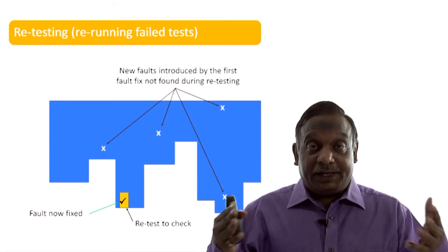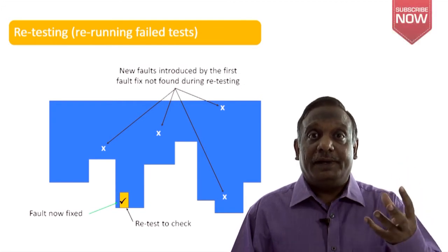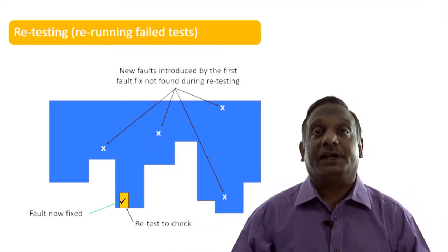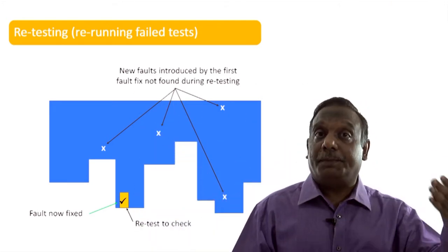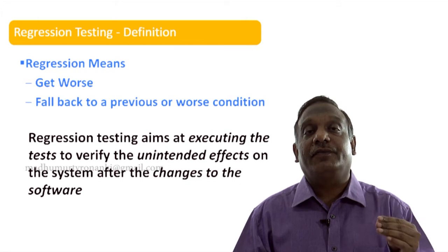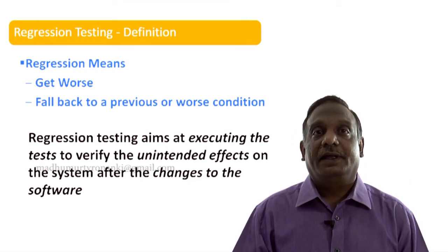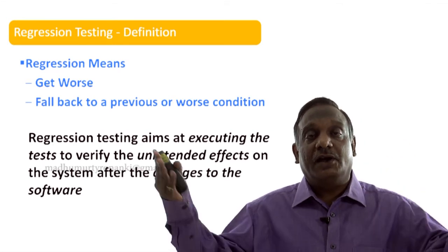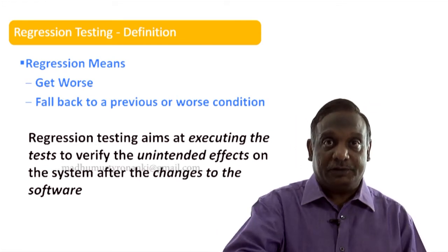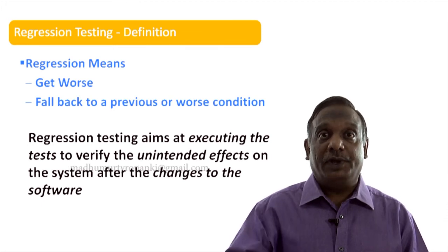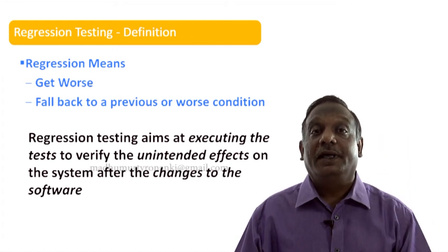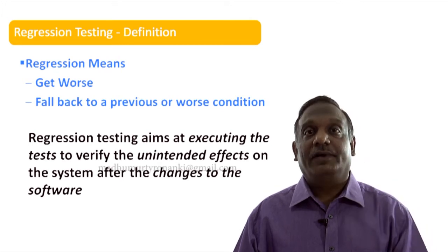But retesting is not sufficient, because the developer has modified this area of the software. Unfortunately it may have many interconnections with other areas of the software which were perfect previously. Whenever you change the software, we run a risk of regression. Regression is taking a backward trend — something that was good earlier suddenly going bad. That is what we call regression. It is anti-progression. If you are progressing you are improving; if you are taking a backward trend, then we call it regressing.